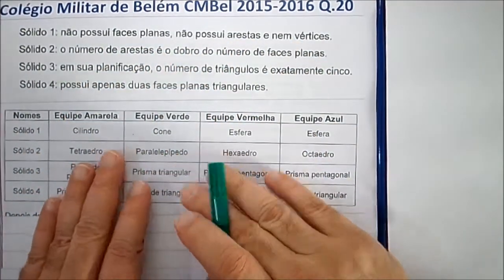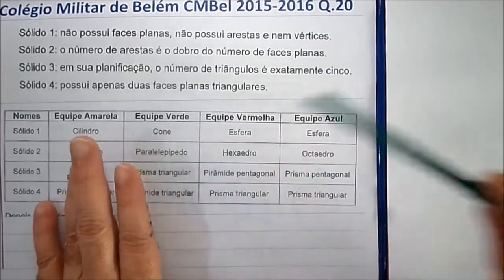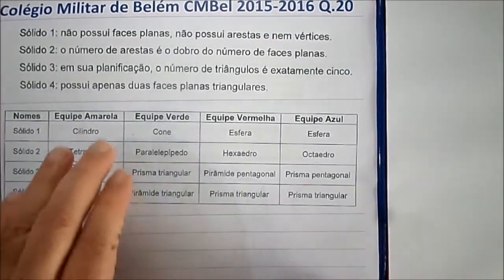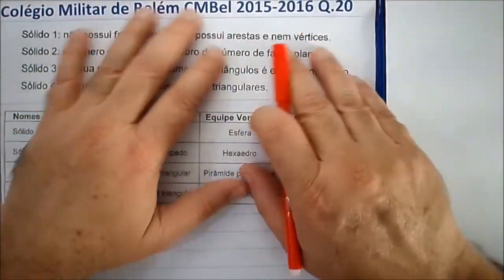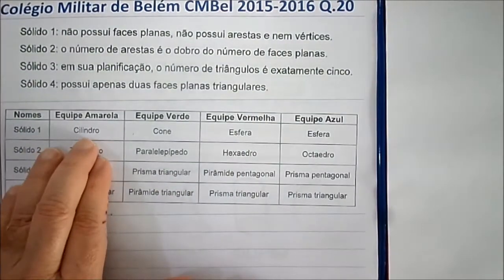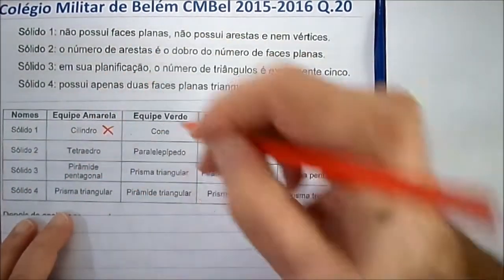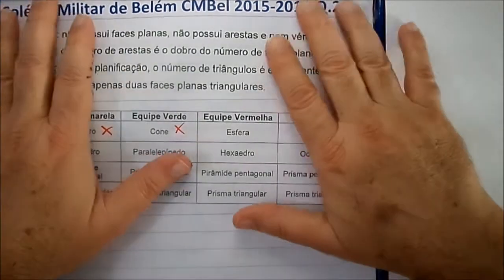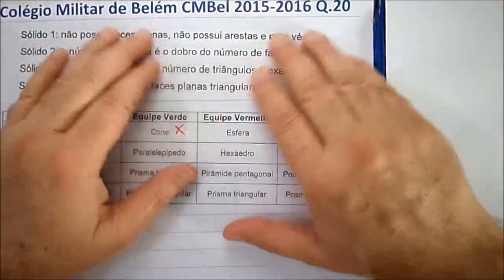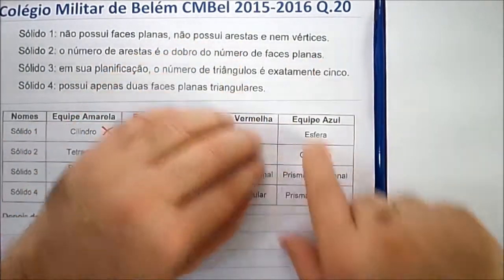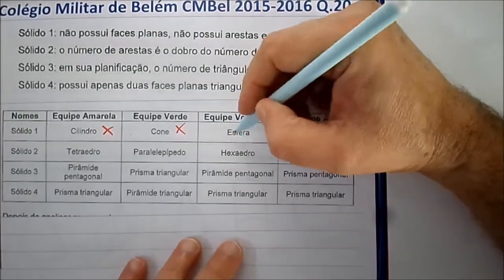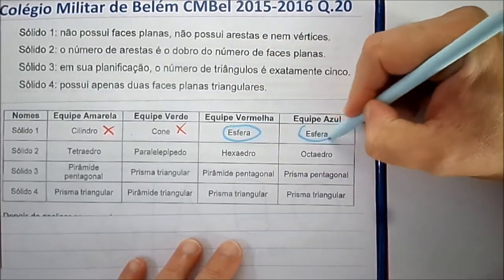Aqui temos o que as equipes responderam. A equipe amarela falou que o sólido 1, que não tem faces planas, nem vértices, nem arestas, é o cilindro — isso está errado. O sólido que não tem faces planas e é um corpo redondo sem arestas nem vértices é a esfera. As equipes que responderam esfera acertaram.